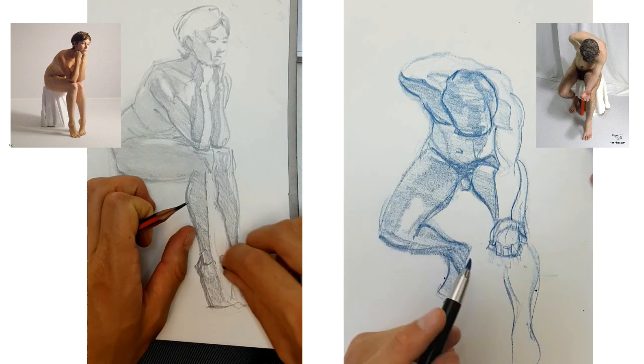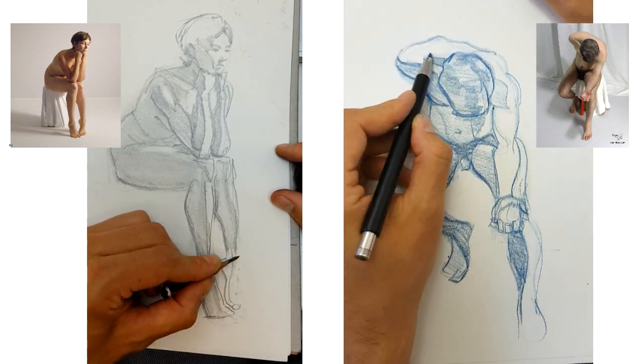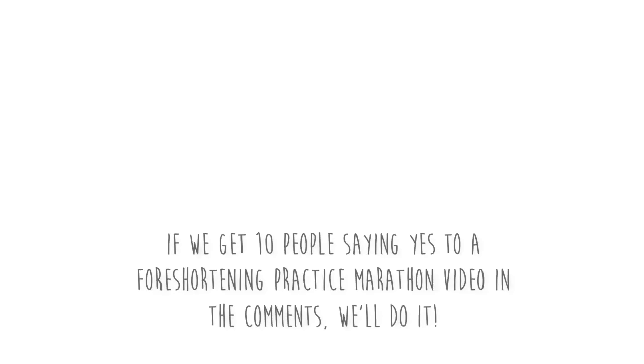We're thinking about collecting together a set of foreshortened croquis cafe poses together with the cross contour line arm exercise that we're going to talk about later in this video into an hour long foreshortening marathon for you guys to practice with. So if that's something you'd like us to do, let us know in the comments below.